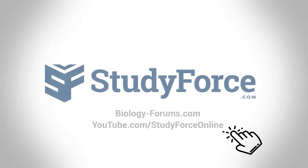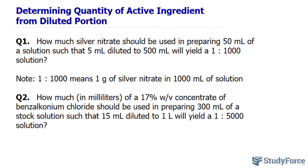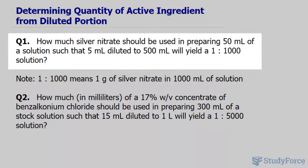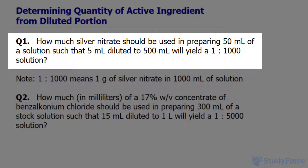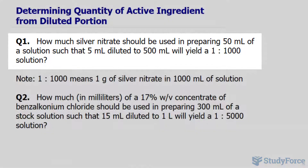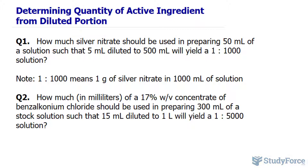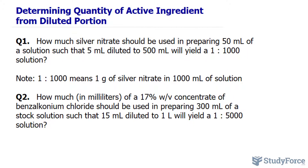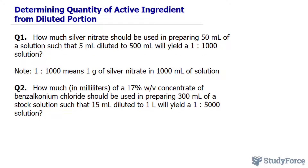In this lesson, I'll show you how to determine the quantity of active ingredient from a diluted portion. I have two examples prepared, and you'll find that to answer these questions effectively, it really helps to make an illustration along the way. So let's begin by reading question number one, and I'll show you how to solve it.